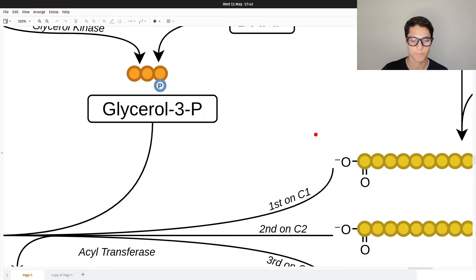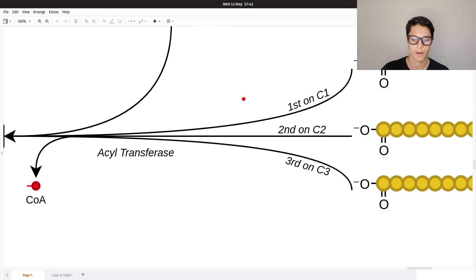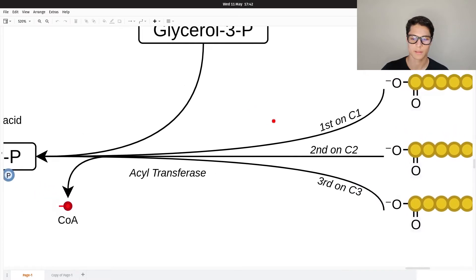Now we can start making the triglyceride. The first fatty acid goes on carbon number one of the glycerol.